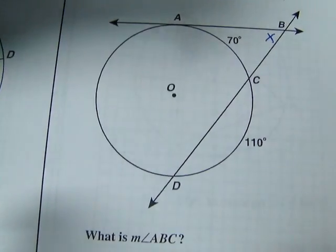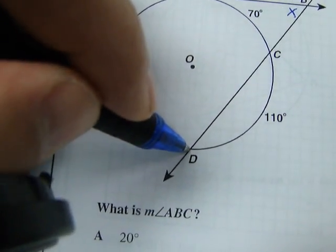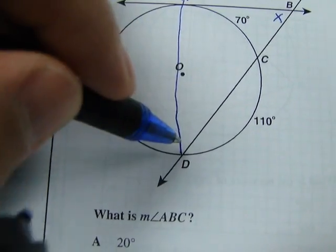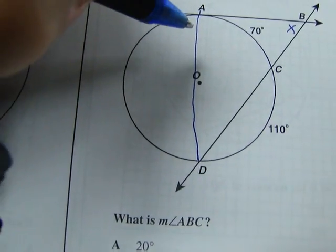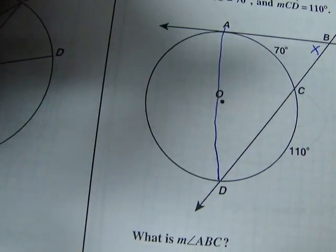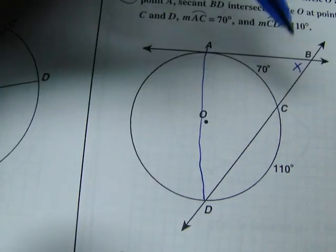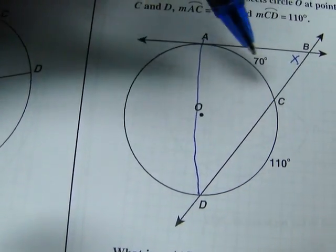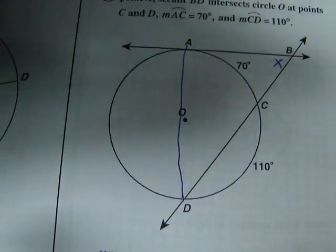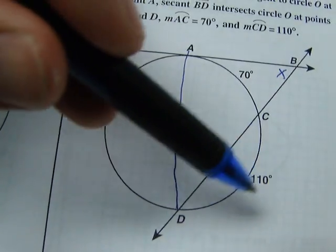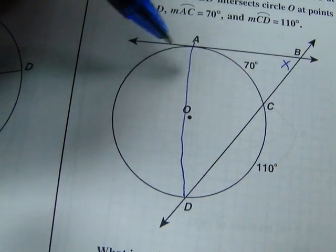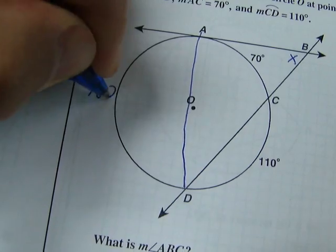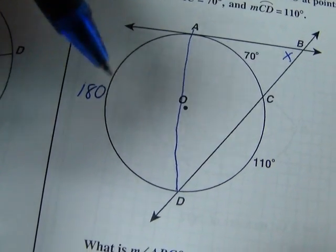So, the question is, do we know this arc? Well, you can think, gosh, if that was a diameter, it would be a 180 degree angle. But that might not be sufficient proof. Here's what is sufficient proof. This arc here is 70. This arc here is 110. 70 plus 110 is 180. So, if this arc is 180, guess what? This arc is also 180. Why? Because circles have to add up to 360. So, if this is 180, now we've got a pretty easy problem.